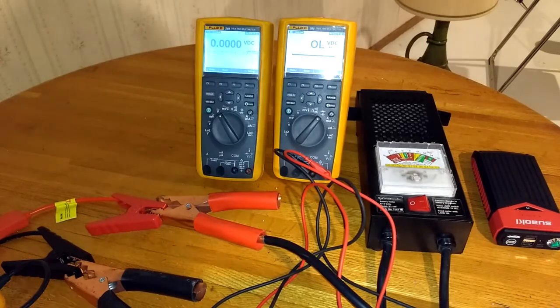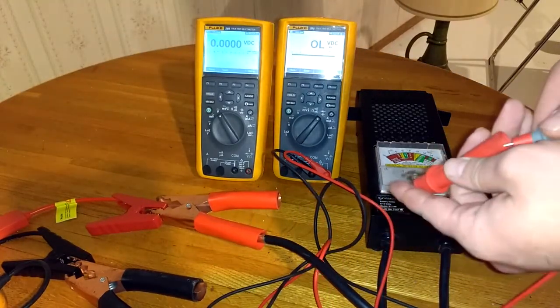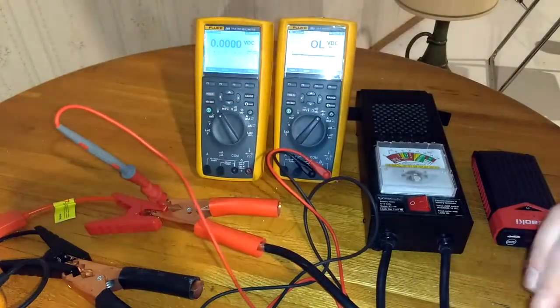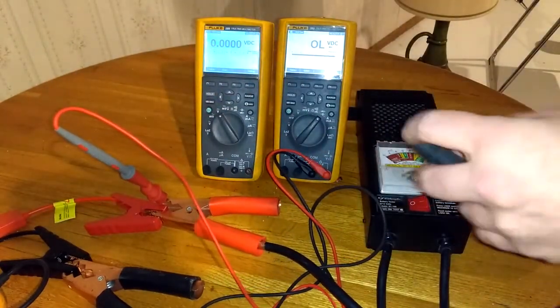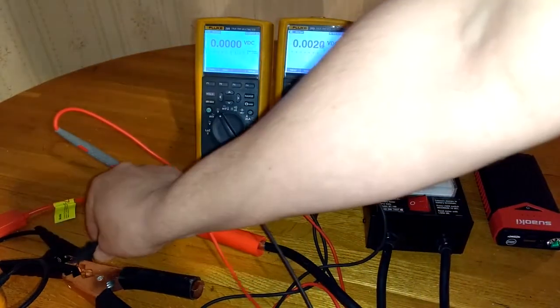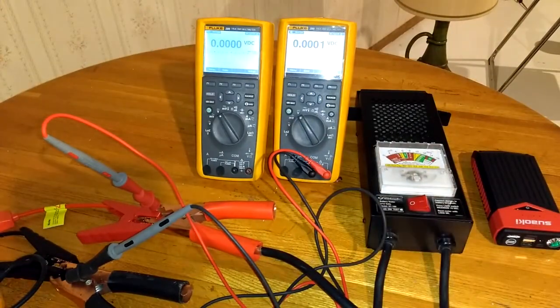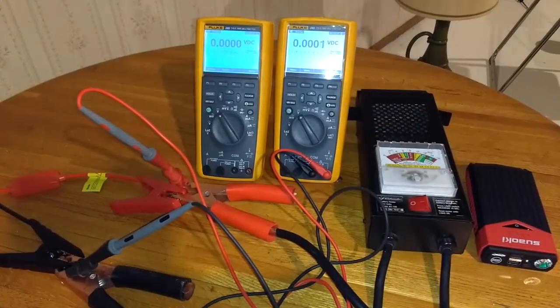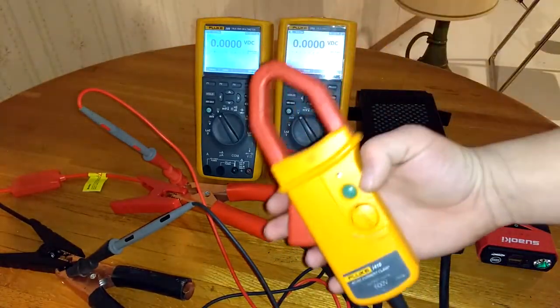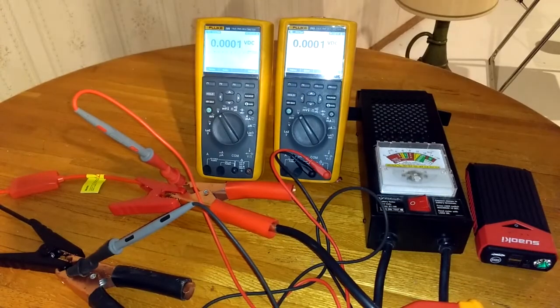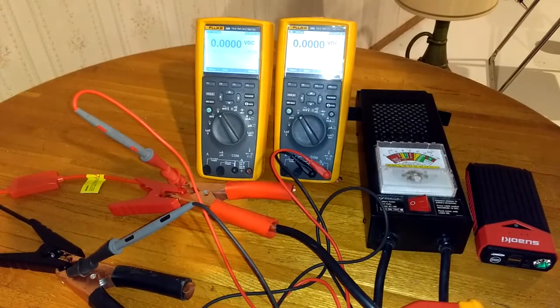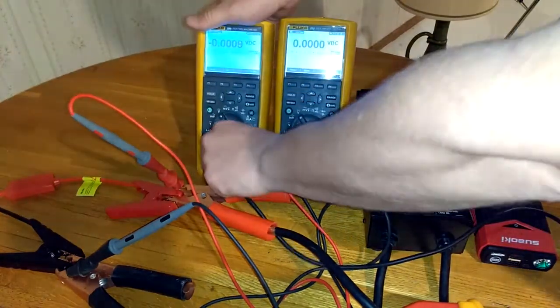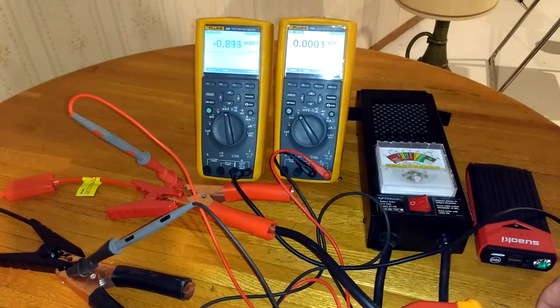Then we're going to take one of our multimeters and measure the voltage right off the clamps. Then we're going to take an amp clamp and I'm going to hook that on to one of these, so that we can get an idea of how much current we're actually drawing from the battery with this given load tester. We'll zero out the current clamp.